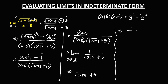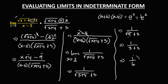Substituting x = 5, we get the square root of (5 + 4), which is the square root of 9, equal to 3. So we have 1 over (3 + 3). Therefore, the limit is equal to 1 over 6.